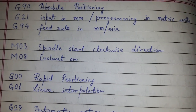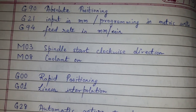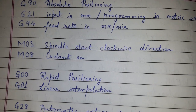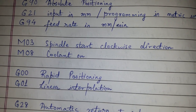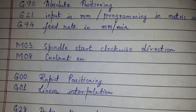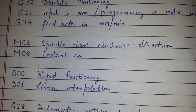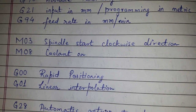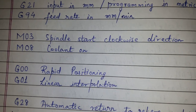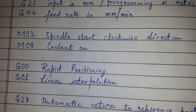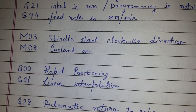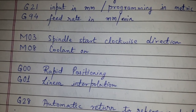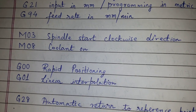G94 is feed rate in mm per minute. M03 is spindle start — the first thing when the job starts is to start the spindle where the drill bit is fixed. M08 is coolant on. G00 is rapid positioning — where there is no cutting operation, we can position fast, so we use G00 rapid positioning.